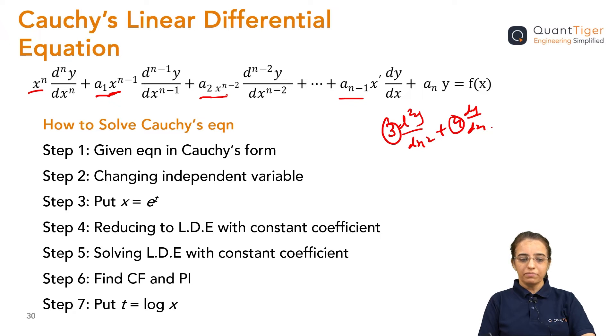If you see that every term is having constant and along with some x term is also there with a differential. That is the thing, that is how we can identify it. That is what the difference between this Cauchy's linear differential equation and the other differential equations. Easily whenever you will see this kind of situation, the equation which is having differential like higher order differentiation and along with constant and some x terms involved in it, then you can say that it is a Cauchy's linear equations.